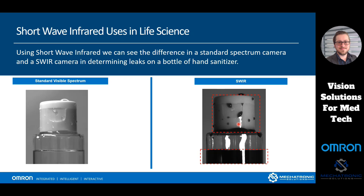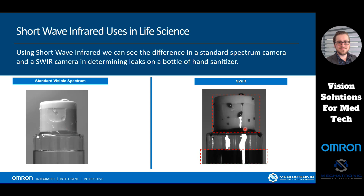The next example is how we can use shortwave infrared to see not just the fill level of a bottle, but also if that bottle is leaking. If a pharmaceutical company is developing a stomach medicine, we could inspect to make sure that all those bottles are the exact same level, no matter what the outside of the container is. We can use shortwave infrared to see that liquid level and also detect any problem — clearly seeing if a bottle is leaking and getting it off the assembly line.